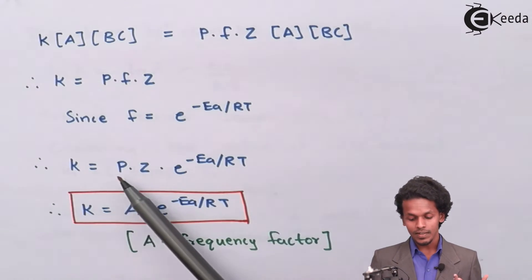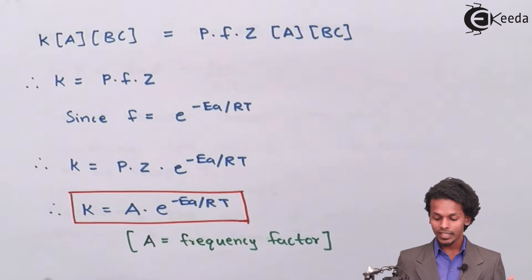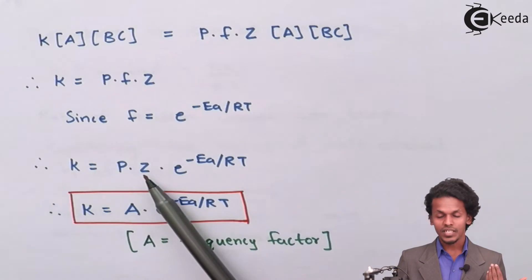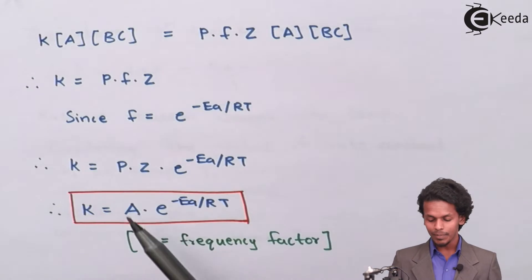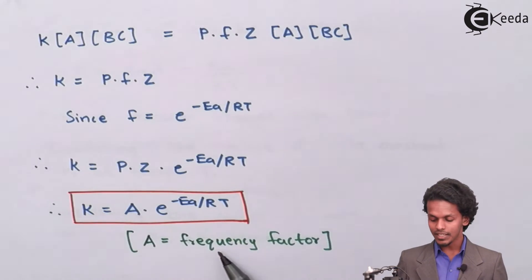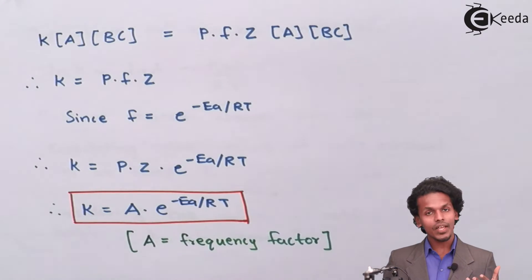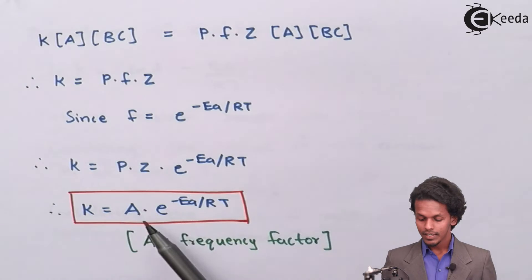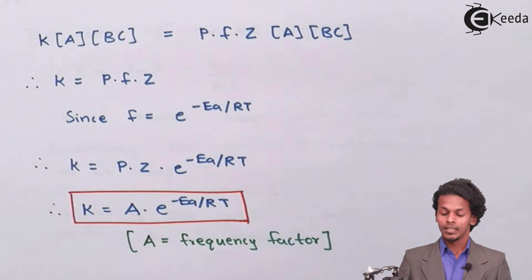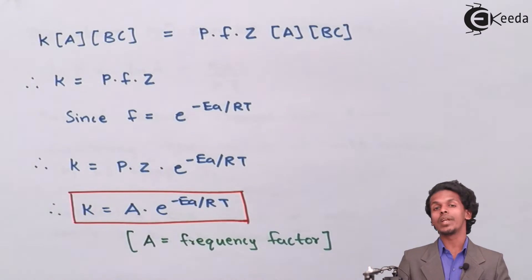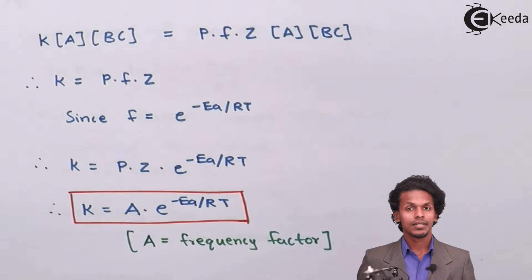Since P and Z are both constant values — P depending on proper orientation and Z being the collision frequency factor — we multiply both of them to get the value A, known as the frequency factor or pre-exponential factor. So the formula we get is: K equals A into e raised to minus Ea upon RT. This is the Arrhenius equation, related to one temperature, and this formula can also be expressed in logarithmic form.